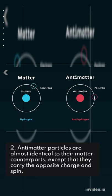Number 2. Antimatter particles are almost identical to their matter counterparts, except that they carry the opposite charge and spin.